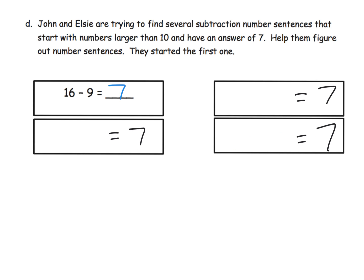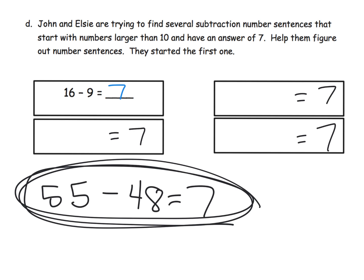This is also a great way for students to differentiate themselves because some students might get something as large as 55 minus 48 equals 7. And in first grade, that's really differentiating high. You might even change the constraints to differentiate on the low side.